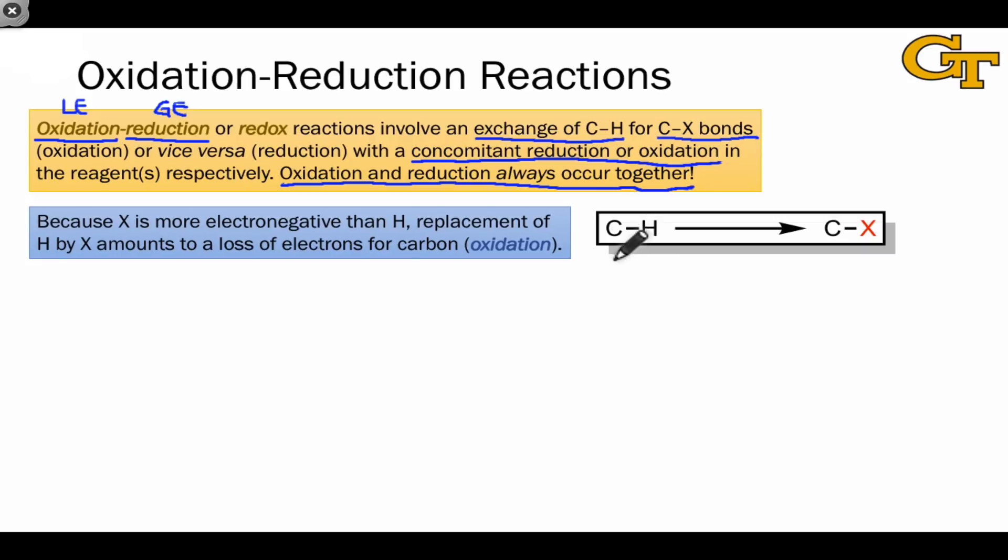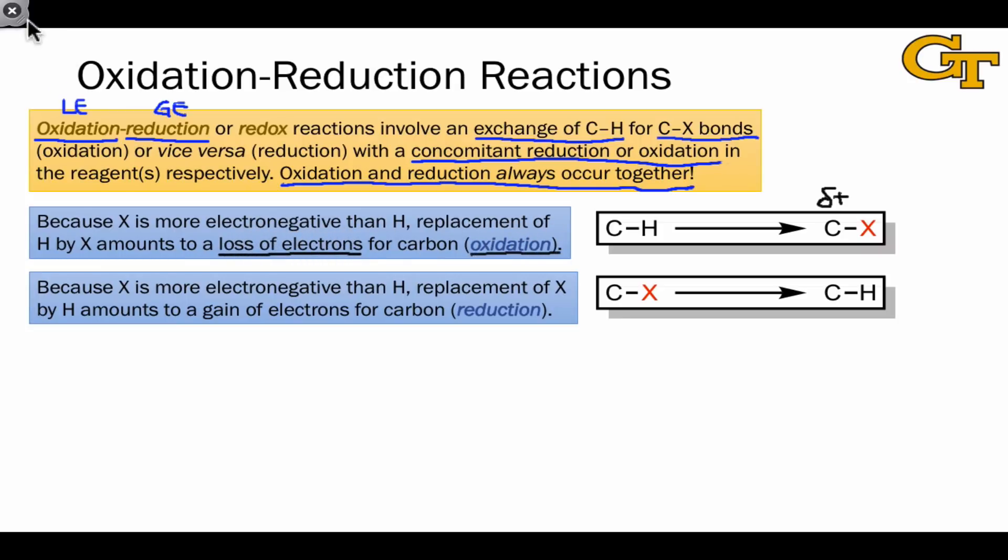We're going from almost electrically neutral in the CH group to a CX group where the carbon likely has a partial positive charge. That's loss of electrons. This is why this represents an oxidation. For the same reason, going the opposite direction, from a CX group where carbon is partially positive to a CH group where carbon is more or less electrically neutral, that represents a gain of electrons by the carbon atom. And this is what we refer to as reduction.